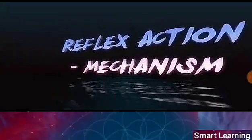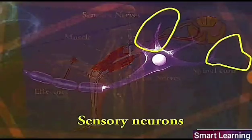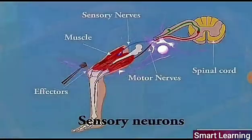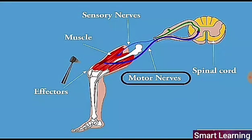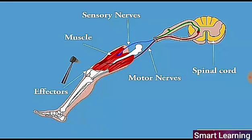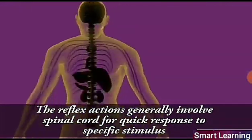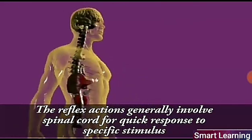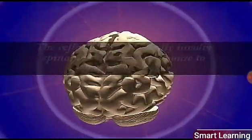Reflex action mechanism: In reflex action, fine tips — that is dendrites of receptors, that is sensory neurons — quickly relay a message in the form of an electric impulse via sensory nerves to the spinal cord. The spinal cord then sends an impulse via motor nerves to effectors, that is muscles or glands. Reflex actions generally involve the spinal cord for quick response to a specific stimulus; otherwise the thinking process of the brain may take time and delay the response, which may harm the animal.